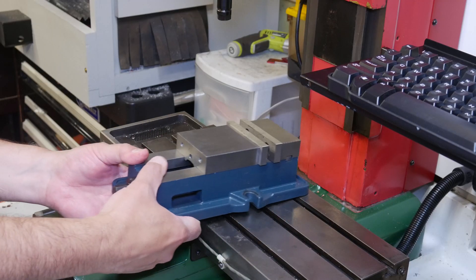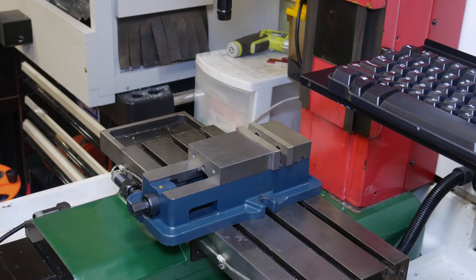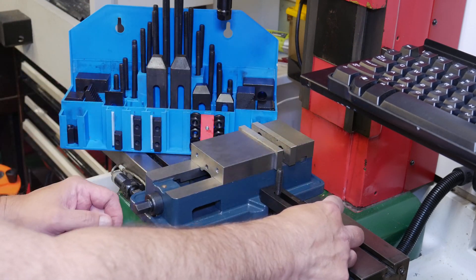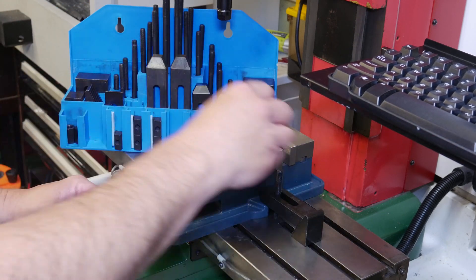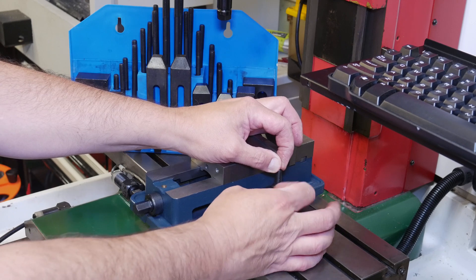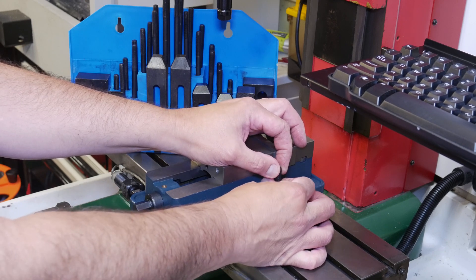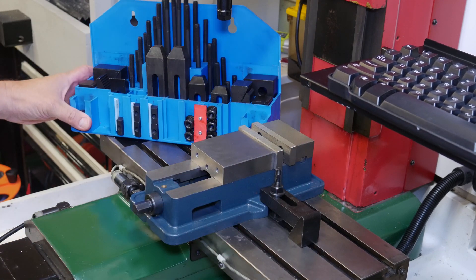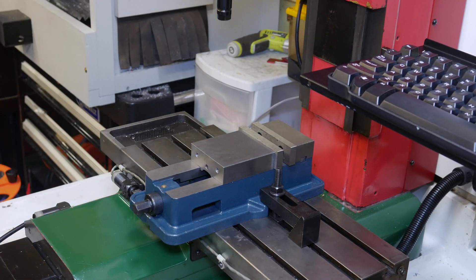I ended up ordering an inexpensive vise and clamp set since I didn't really have anything that would fit this machine. The T-slots in this table are 3 eighths of an inch, and that's even smaller than the little X2 mill uses. I know these are cheap, but I think they could have done a bit nicer job modifying this rack to fit the smaller hardware.